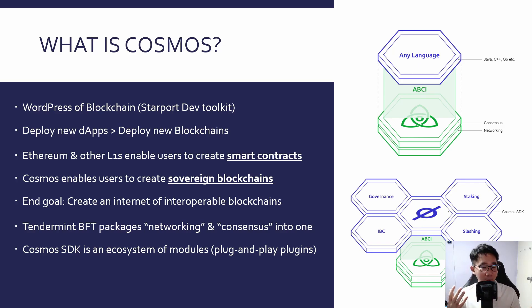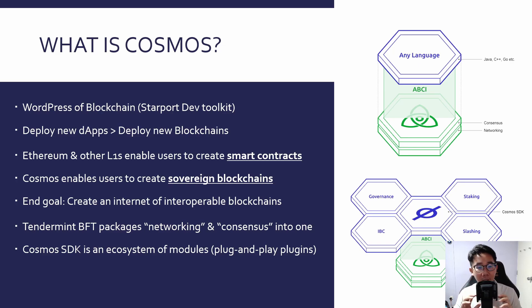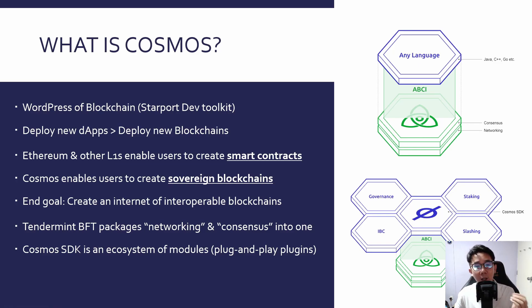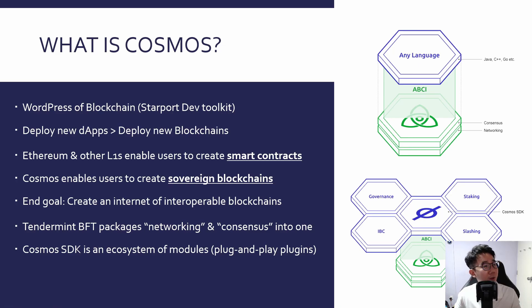Some of the benefits of being a sovereign blockchain include the ability to create both public and private blockchains, because you can define who the validators are and the permission settings. The angle of Cosmos is to create an internet of interoperable blockchains — making it easy for everyone to create blockchains very easily, even in 15 minutes over a weekend. This is made easy by Tendermint BFT, which packages networking and consensus into one single engine. Cosmos SDK is an ecosystem of modules — like plug-and-play plugins — including governance, staking, and slashing, so you don't have to build these from scratch.